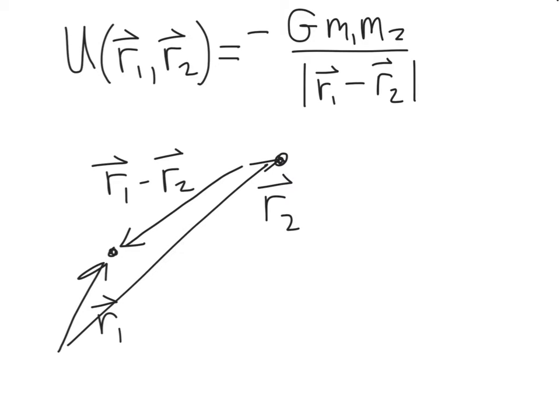We'll assume these forces are conservative, so we can write a potential energy function that describes them. One example is the gravitational force between two masses. The potential energy function for gravitational force is given by the constant G and the product of the two masses divided by the magnitude of their separation vector.